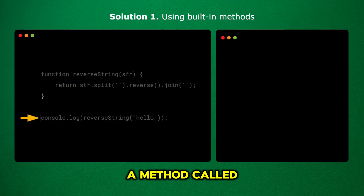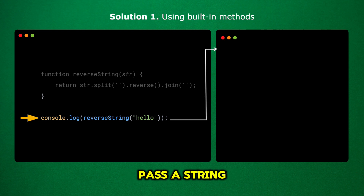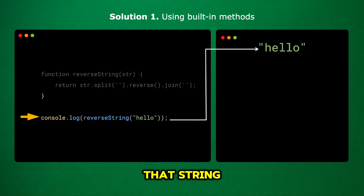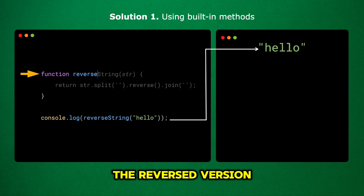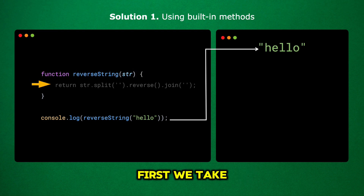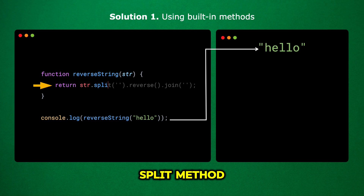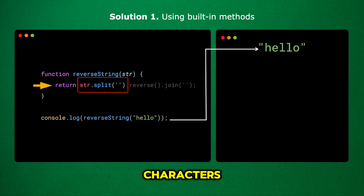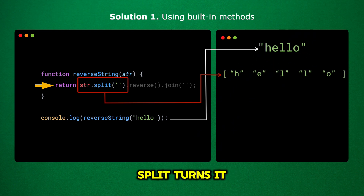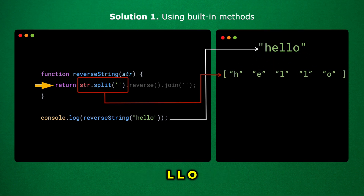Here we have a method called reverseString. When we call this function, we pass a string to it. The function then works to reverse that string and gives us the reversed version as the output. First, we take the input string and use the split method. This splits the string into an array of individual characters. So if we start with 'hello', split turns it into ['H', 'E', 'L', 'L', 'O'].